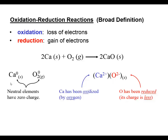Calcium had a zero oxidation number in its elemental form, and oxygen had a zero oxidation number in its elemental form. If I have a monoatomic ion, this is a case where the oxidation number happens to be the same as the charge. The oxidation number is a plus 2 for the calcium.